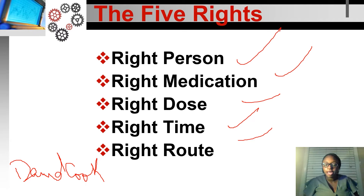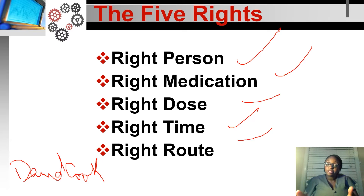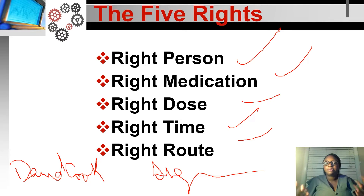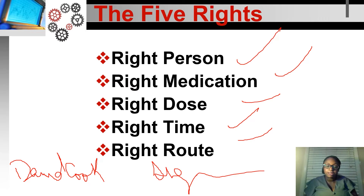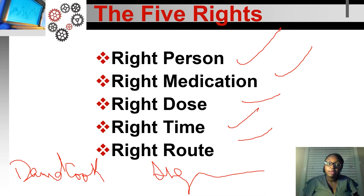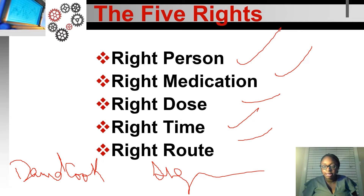Remember the example of David Cook — the medication was Ultram, dose 50 milligrams, the time was three times a day, and the route was by mouth. The only thing missing between the five rights and the six components of a med order is the doctor's signature, because it's assumed that the doctor's signature is there by the time you're going over the five rights.